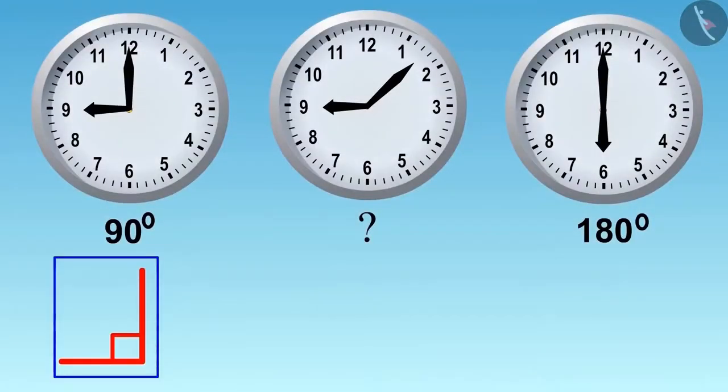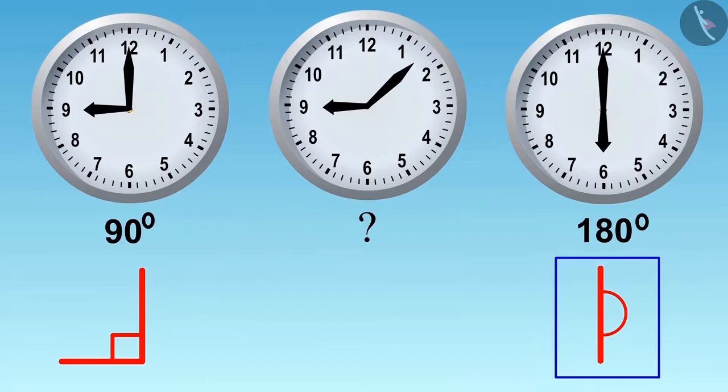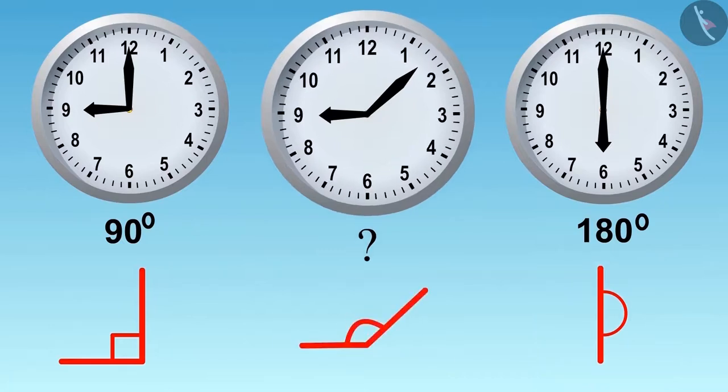Children, now you have seen angles of ninety and one hundred eighty degrees. Can you tell how many degrees this angle makes by looking at it?